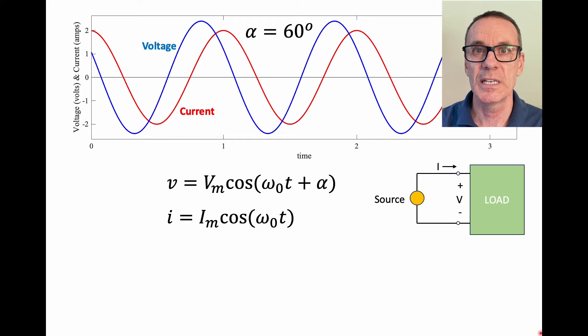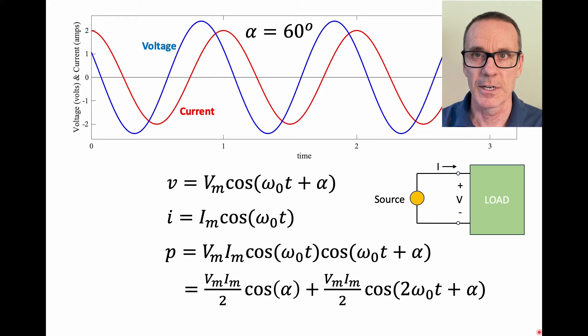And the power, of course, is the multiplication of those two, the voltage and the current. So I've just written them down here. Now you can use some high school maths to take the multiplication of two cos terms and rewrite it as the summation of two cos terms, which is what I've done here. And we notice that the first term doesn't depend on time. The second term does depend on time, and it's oscillating at twice the frequency of the voltage and the current.